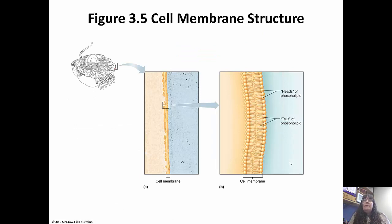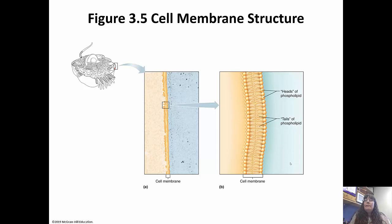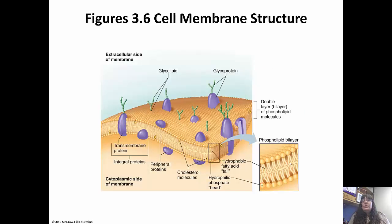Looking at a close-up of the cell membrane, you can see the lipid bilayers — the phospholipid heads are like the bread, and the tails in the middle are like the meat. The tails are protected inside. The proteins interspersed through the plasma membrane are the purple structures. The tiny yellow cholesterol molecules are hanging on to those phospholipids to help maintain fluidity.